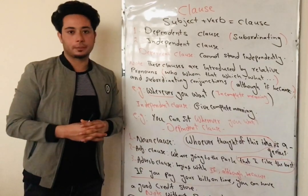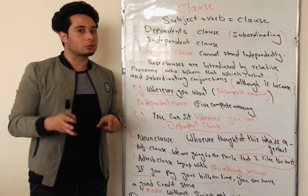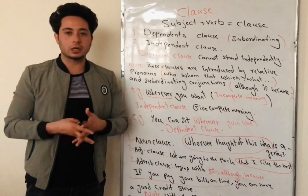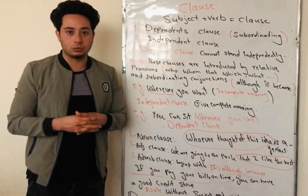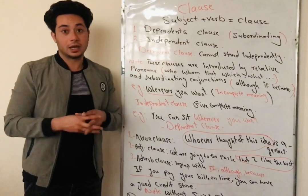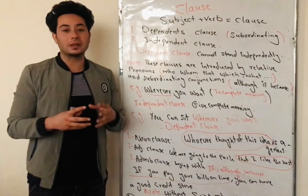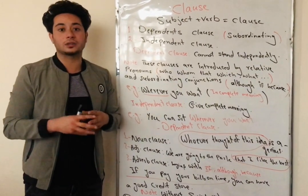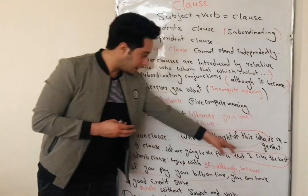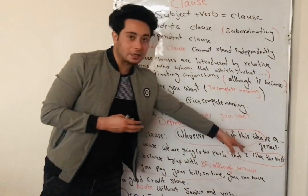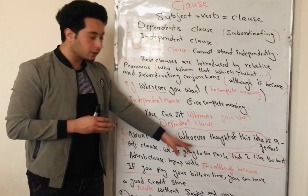Let's talk about the types of dependent clauses. Dependent clauses are also broken into three sections, which are called noun clause, adjective clause, and adverb clause. What are noun clauses? A noun clause is when a group of words comes together and acts as a noun, and also they can act as a subject in the sentence — on that time we call them noun clauses. Noun clauses are introduced by whatever, whoever, whether, which, what, and also that. For example: 'Whoever thought of this idea is a genius.' In this sentence, 'whoever thought of this idea' is a group of words acting as a subject and also as a noun, so they are called a noun clause.